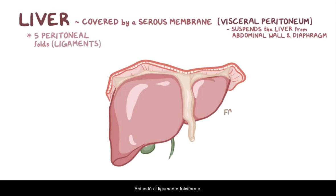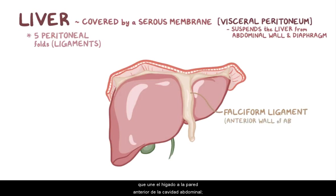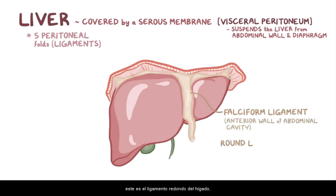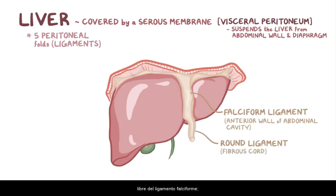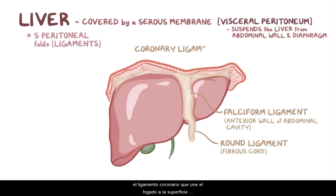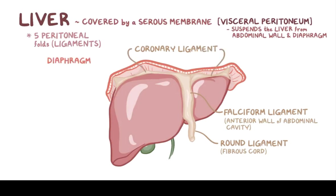There is the falciform ligament, which attaches the liver to the anterior wall of the abdominal cavity. There's the round ligament of the liver, which is a fibrous cord found in the free margin of the falciform ligament. There's the coronary ligament, which attaches the liver to the inferior surface of the diaphragm.